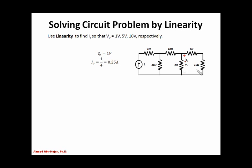Now I know the current through the 4 ohm resistor. The two other resistors are in series, giving an equivalent resistance of 16 ohms, and they are in parallel with the 4 ohm resistor. The current through those two resistors, I1, equals the voltage across them — which is the same 1 volt — divided by 16 ohms, giving 1 over 16, or 0.0625 amps.